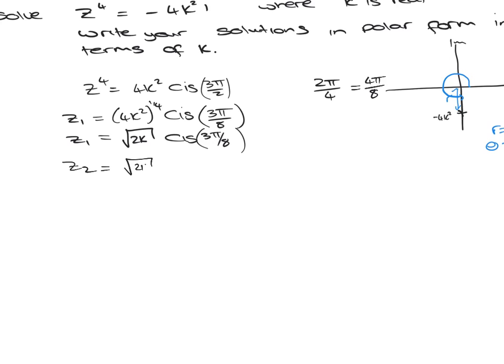So we know our next root is going to be root 2k, cis, now we're going to do 3 pi over 8 plus 4 pi over 8. So it becomes root 2k, cis 7 pi over 8.